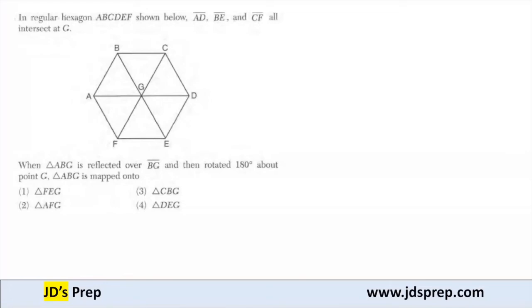Hello, welcome to JD's prep. In this example, the regular hexagon ABCDEF shown below has AD, BE, and CF all intersecting at point G.